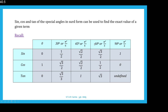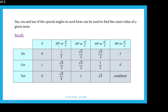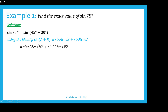Example 1: Find the exact value of sin 75°. We express 75° as 45° plus 30°, since both are special angles whose exact values we know in surd form. Using the identity sin(A+B) = sin A cos B + sin B cos A, with A=45° and B=30°, we get sin 45° cos 30° plus sin 30° cos 45°.